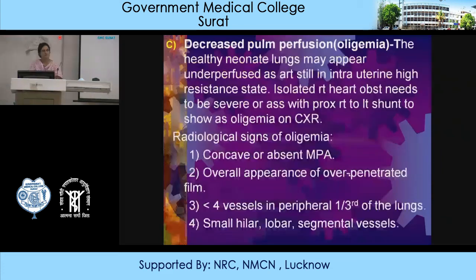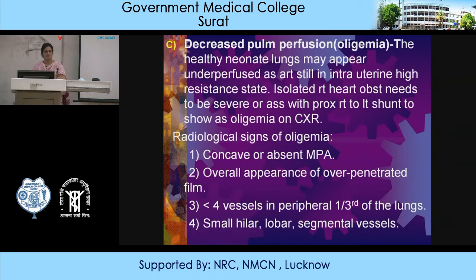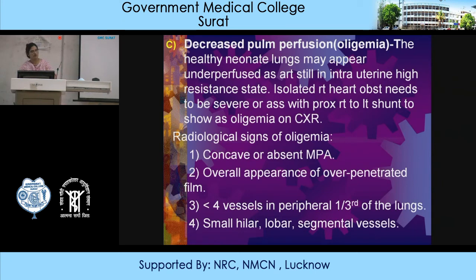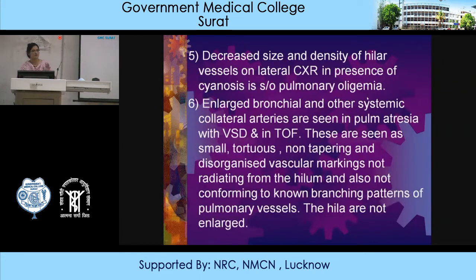Decreased pulmonary perfusion or oligemia: normally the healthy neonatal lungs may appear underperfused because they are still in an intrauterine high-resistance state. Isolated right heart obstruction needs to be severe or associated with proximal right-to-left shunt to show as oligemia on chest X-ray. Signs of oligemia: concave or absent MPA, overall appearance of an over-penetrated film because the heart is small and vasculature is reduced, less than 4 vessels in the peripheral one third of the lungs, smaller hilar and lobar segmental vessels, and decreased size and density of hilar vessels on lateral chest X-ray.